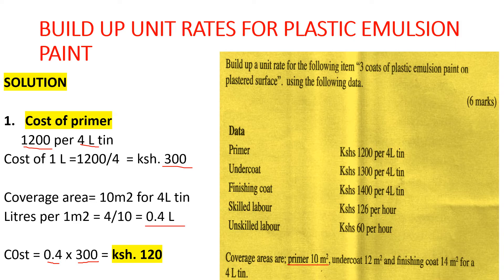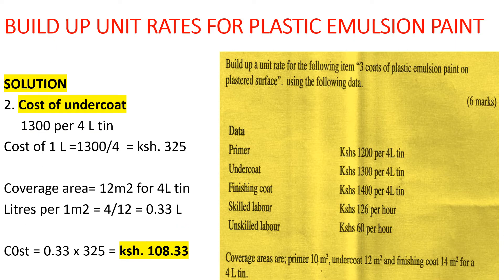For the undercoat at 1,300 per 4-liter tin, the cost of one liter is 325 shillings. The area coverage is 12 m² per 4-liter tin, so the amount of undercoat needed for one m² is 4 over 12, giving us 0.33 liters. The cost of the undercoat per m² is 0.33 multiplied by 325, giving us 108.33 shillings.